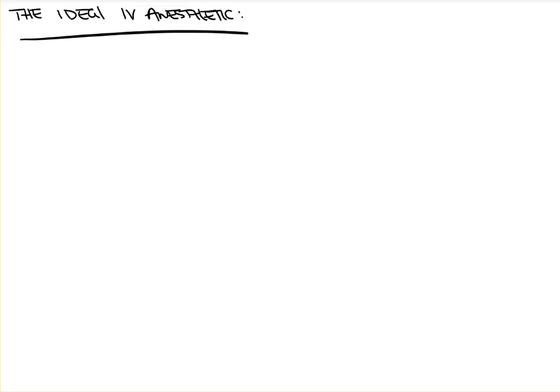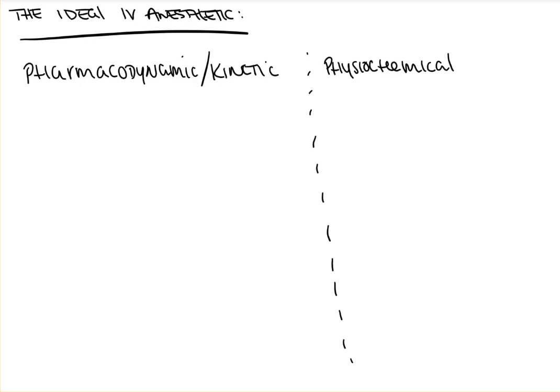First, there are two general bodies that we need to look at when describing the qualities of an IV anesthetic: the pharmacodynamic and pharmacokinetic qualities. And then we also have to take a look at our physiochemical properties.